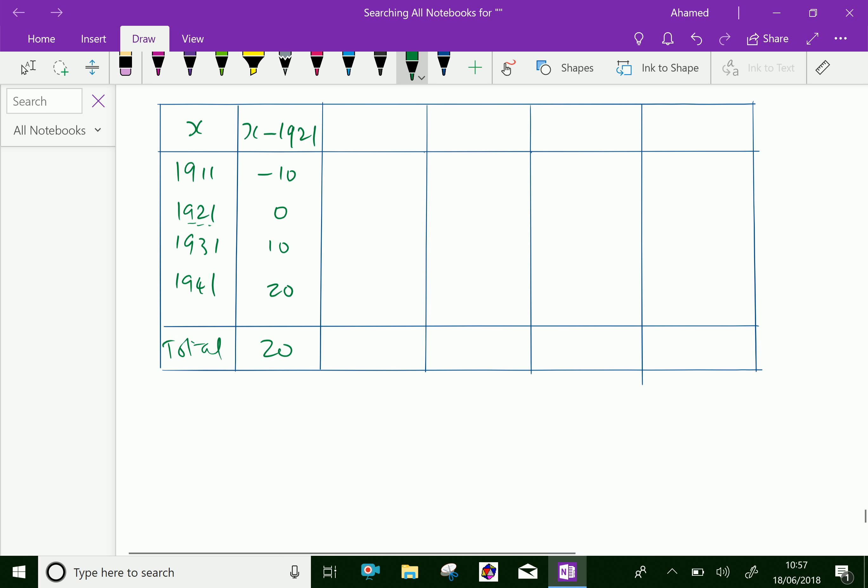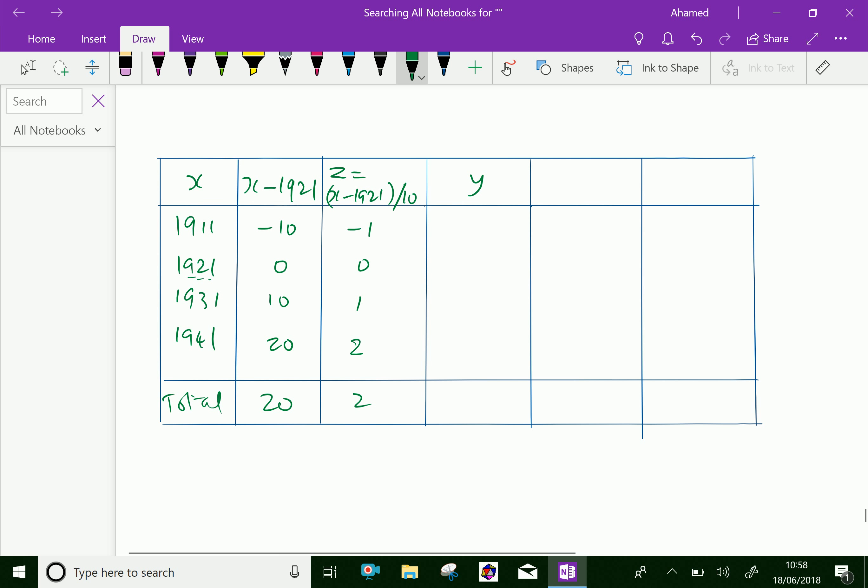Now, we will find z equal to x minus 1921 divided by 10. Because each 10 years, they are calculating the population. So, minus 10 by 10 is minus 1, 0 by 10 is 0, 10 by 10 is 1, and 20 by 10 is 2. Here, the total is 2. Now, y values, which is given in the table before, that is 30.3 crores, and 30.5, 33.8, 38.9.